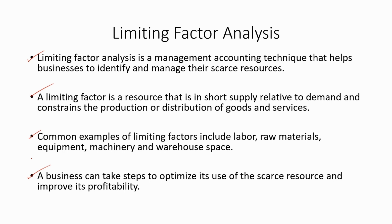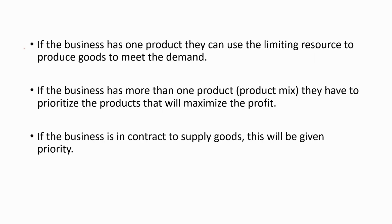A limiting factor can be any factor within the organization. There are three instances when it comes to limiting factor. If the business has one product, they can use the limiting resource to produce goods to meet the demand. For example, a bakery where the limiting factor is flour — if they only produce bread, they can use all the flour to make bread. If the business has more than one product, this is called the product mix, and they have to prioritize the products that will maximize the profit.